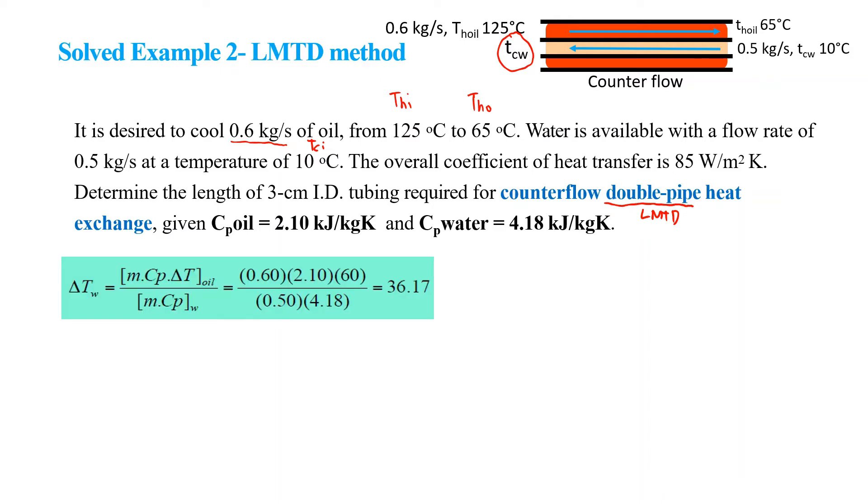So we know that the total Q is the same. I would say that Q hot, delta T water, equals M hot, CP hot, delta T hot, equals Q cold, equals M cold, CP cold, and delta T cold. By using this equation, we will be able to find delta T water which is delta T cold and we find that the cold is 36.17 degrees Celsius.